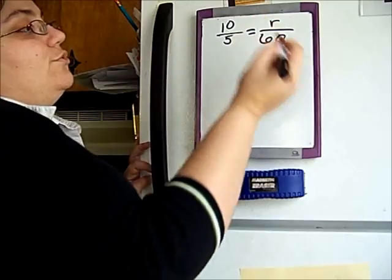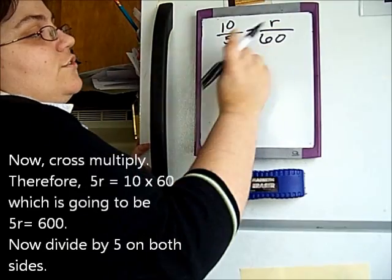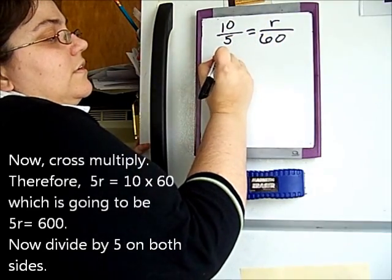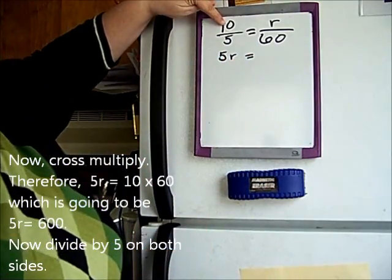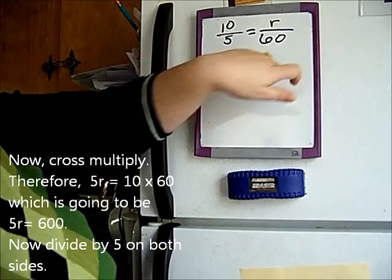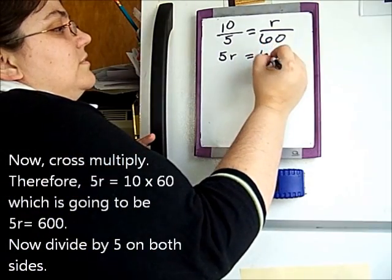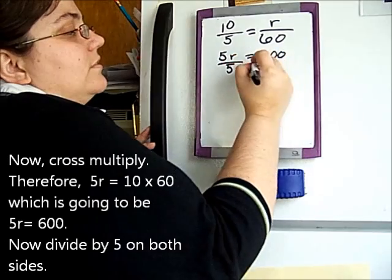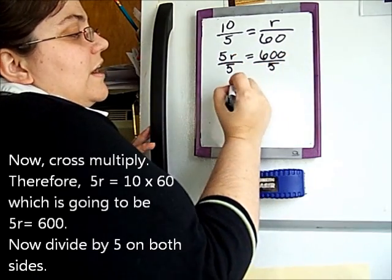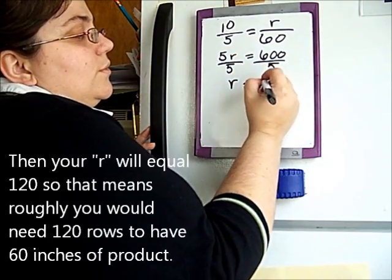So how are you going to figure this out? You're going to do what's called cross multiply. So you're going to take 5R and put it over here, is equal to the 10 times the 60, which is going to be 600, and then you're going to divide both sides by 5, and then your R will equal to 120.